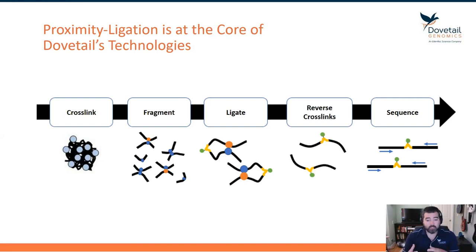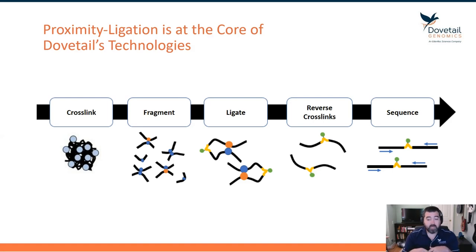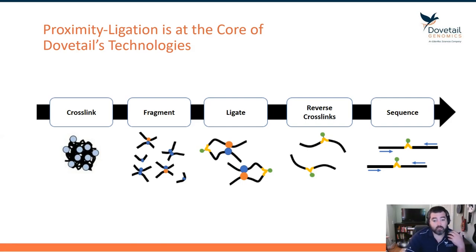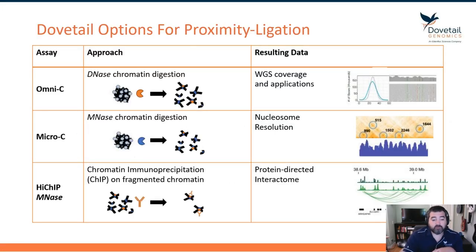We fragment the genome and then ligate those fragments back together based on three-dimensional proximity rather than linear proximity. We have that chimeric read that's biotinylated at the ligation site — we pull down on that molecule and sequence it. From there, there are a handful of flavors that you can do from this core workflow that Dovetail supports. Our first route is Omni-C.